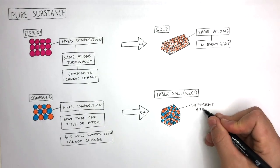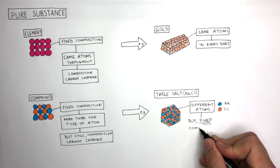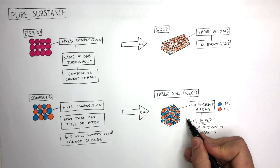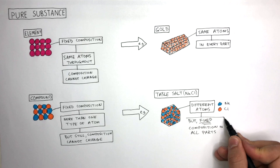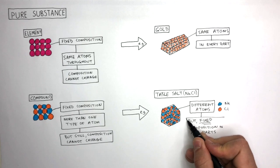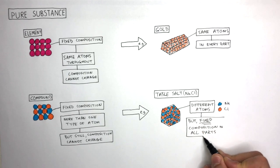Yes, they are different atoms, but there is a fixed composition in all parts of this ionic compound. The particles are held firmly in place and there is a regular repeating arrangement of these particles.